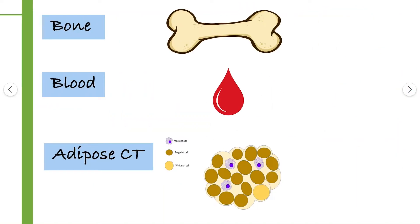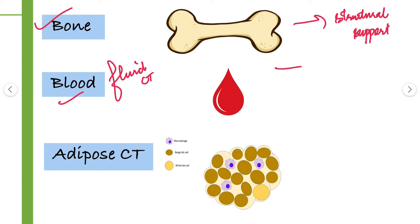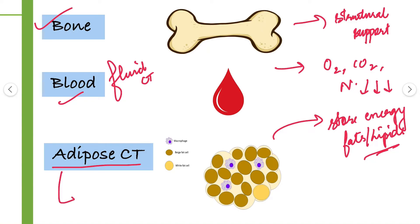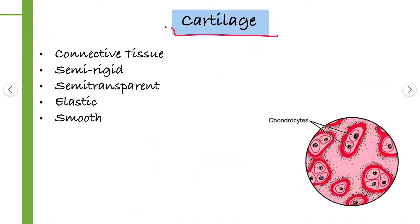Different connective tissues perform different functions. Here we will discuss examples of Connective Tissue. Bone is an example of Connective Tissue — its function is to provide structural support to the body. Next is blood, which is a fluid connective tissue whose function is transportation of carbon dioxide, oxygen, and nutrients. Next is adipose connective tissue, whose function is to store energy in the form of fats or lipids, and its other function is to provide insulation to the body.